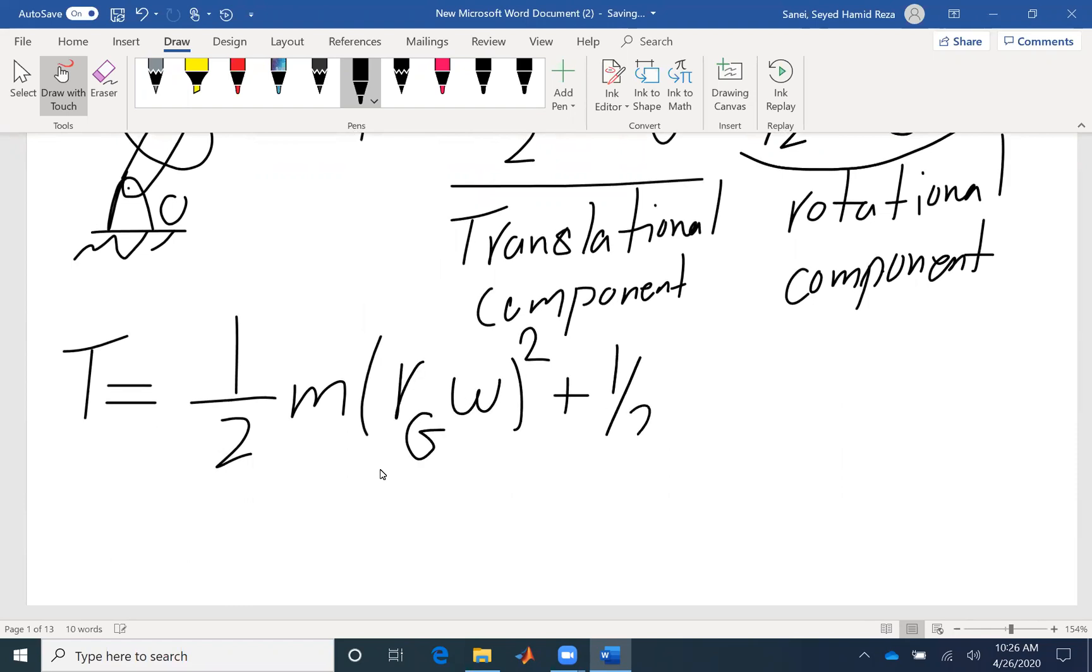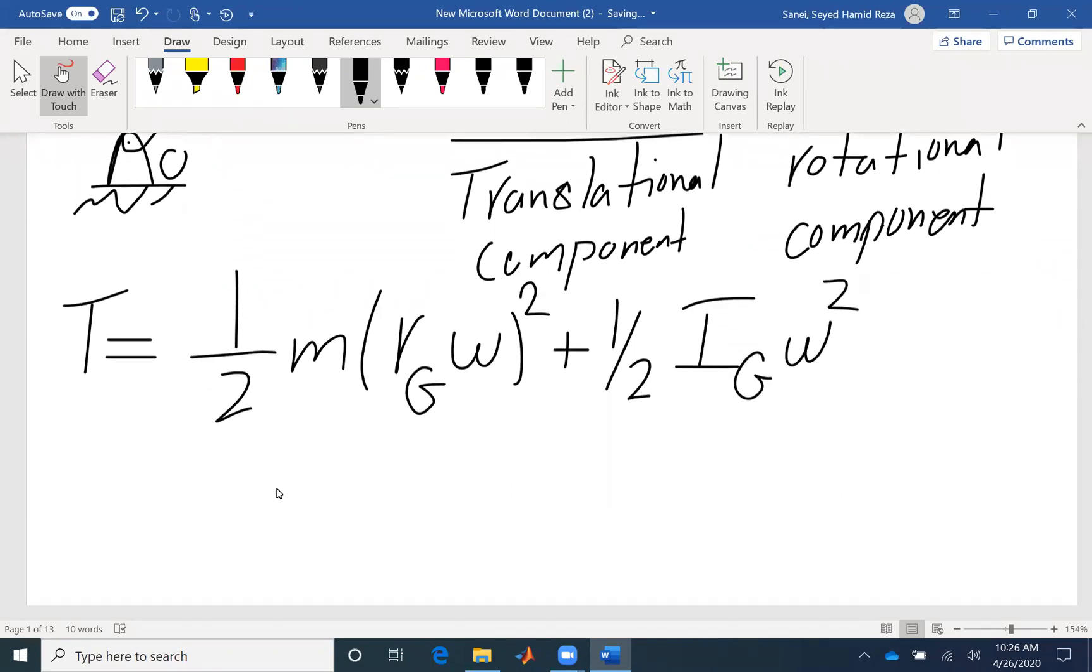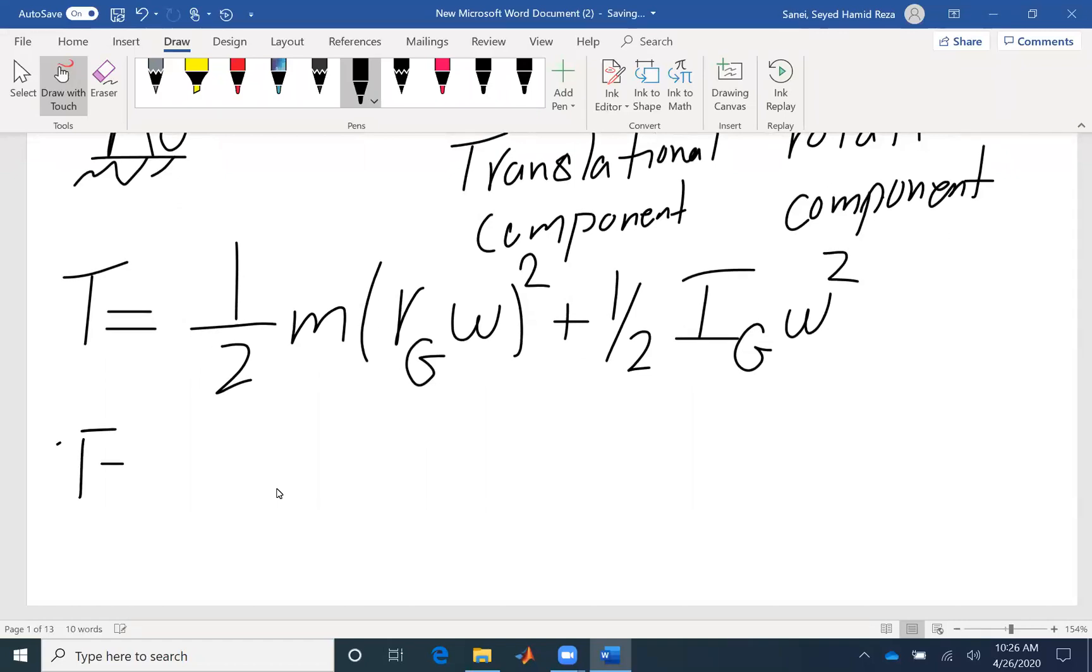And I write the other component. If I factor half omega squared, I will find mRG squared plus IG.